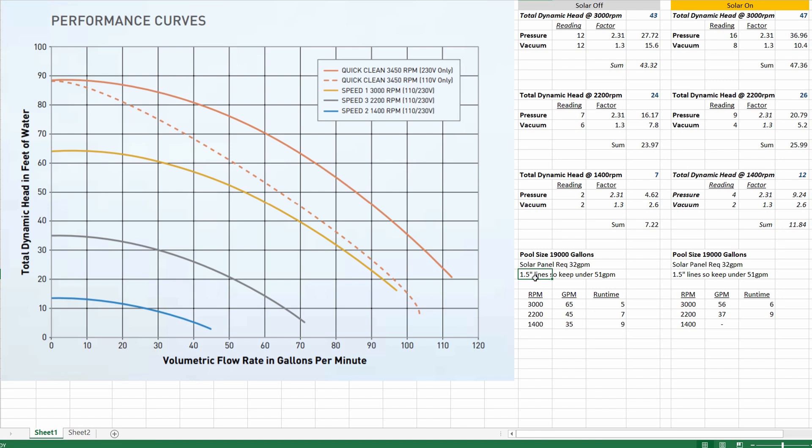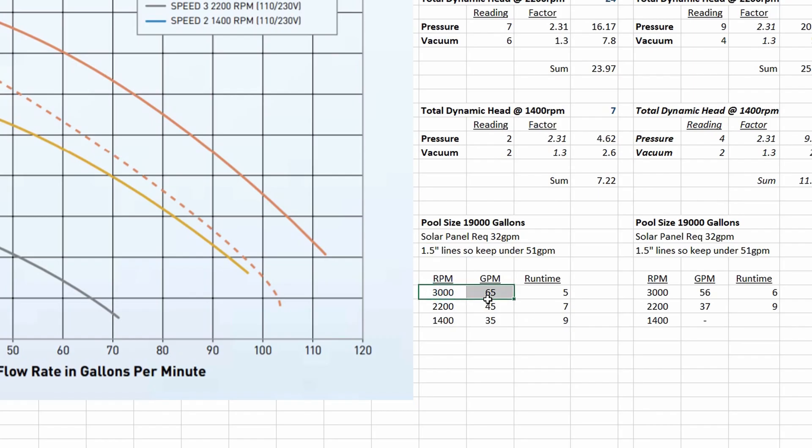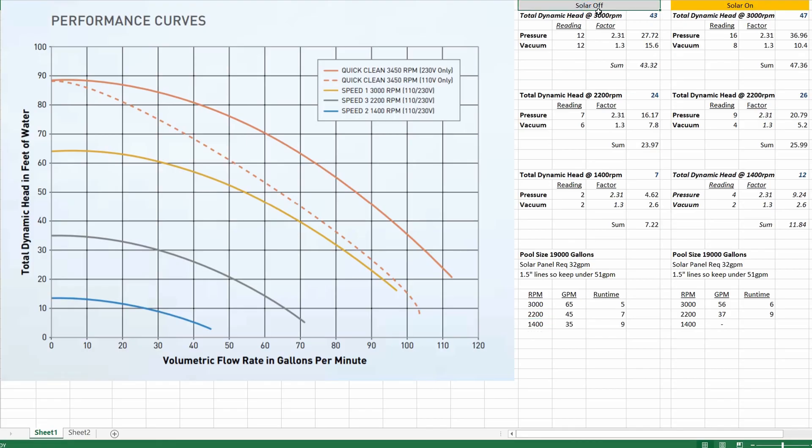So running at 3000 RPMs would be overkill because that would give me 65 gallons per minute. 2200 RPMs would work out at 45 gallons per minute and so would 1400 RPMs but all these readings were taken with the solar off.